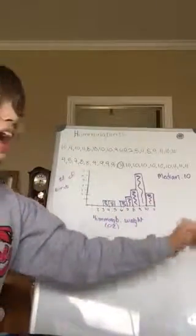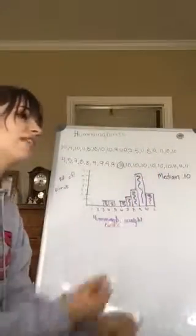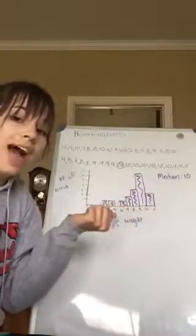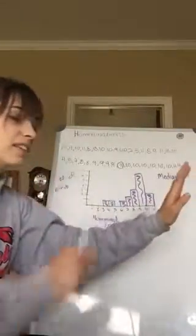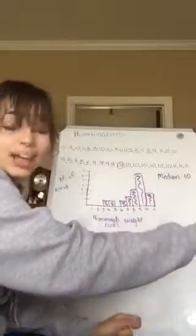So if we had a graph that was skewed to the left, the mean would be pulled out towards that tail end. And if it was skewed to the right, the mean would be pulled out towards that tail end.